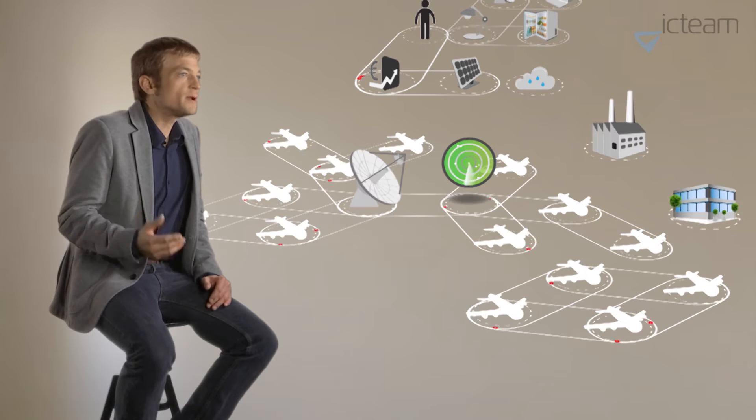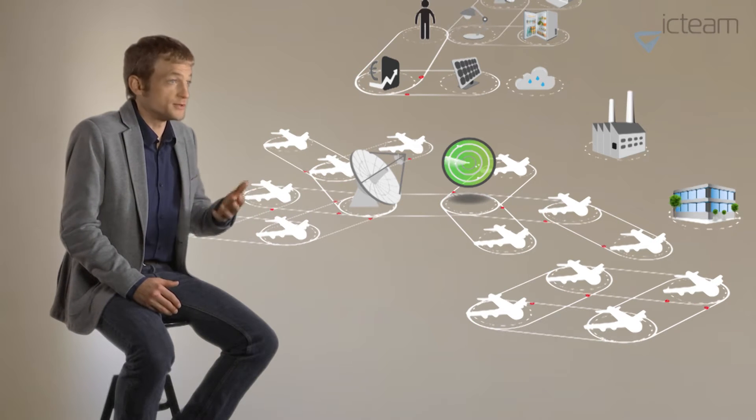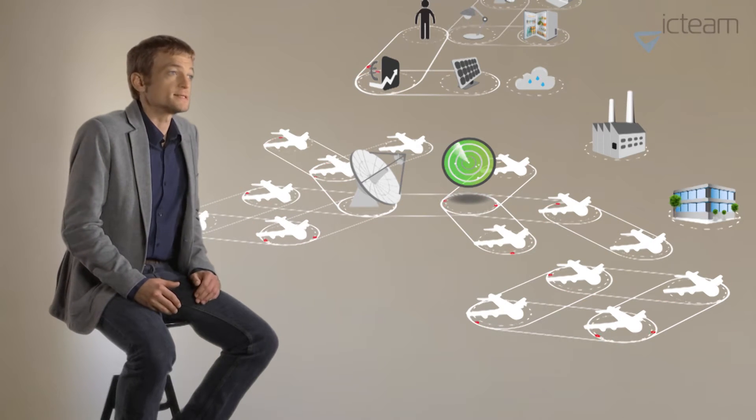Such systems where computing devices and robots interact closed-loop with the physical phenomena they want to control are called cyber-physical systems. Other examples include networks of planes, industrial processes, or energy-efficient green buildings.